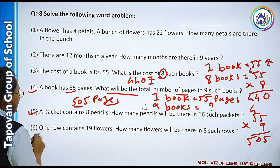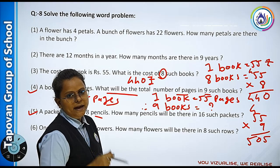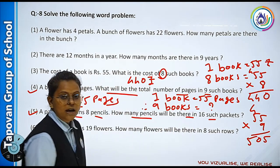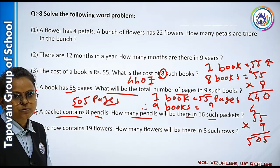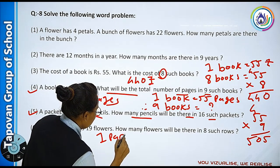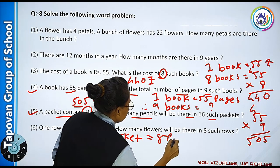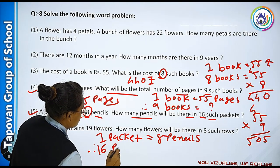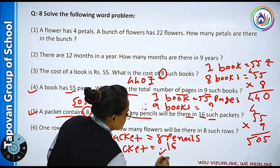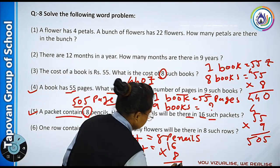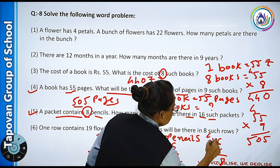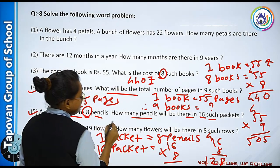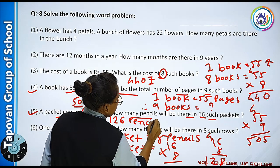Agla question: a packet contains eight pencils. So how many pencils will be there in sixteen such packets? Ek packet mein eight pencils hain, toh sixteen packets mein kitne honge? Sixteen into eight — eight sixes are 48, eight ones are 8, carry 4 — one twenty eight. Toh sixteen packets mein 128 pencils aayengi.